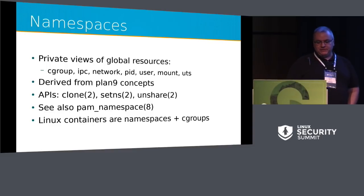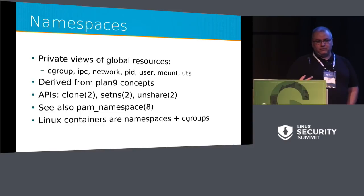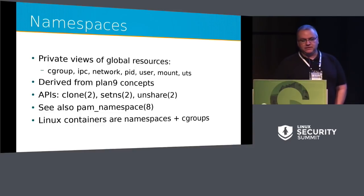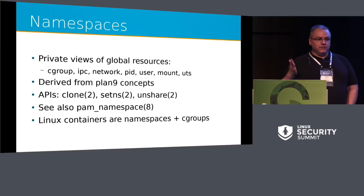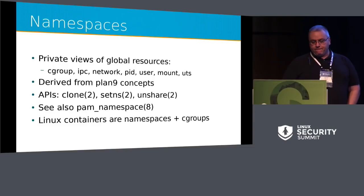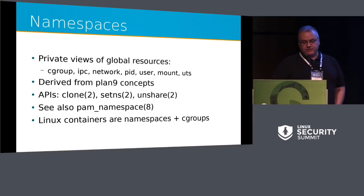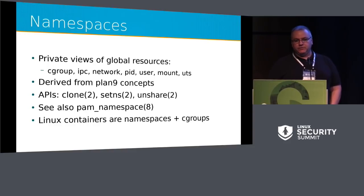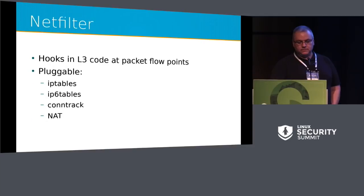Namespaces are another significant increase in security, although not inherently a security feature — they just happen to be very useful. Namespaces were derived from concepts from the Plan 9 operating system, the successor to Unix, and they allow a process to have private views of global resources. A simple example would be giving a process a private version of /tmp that nobody else can write to, eliminating an entire class of temp race directory vulnerabilities. Namespaces are integrated into PAM (pluggable authentication modules), and containers are built on namespaces with cgroups. Combining namespaces, seccomp, and cgroups enables interesting isolation and attack surface reduction.